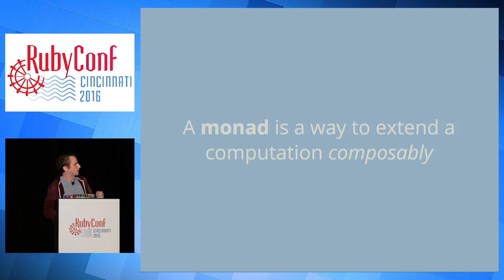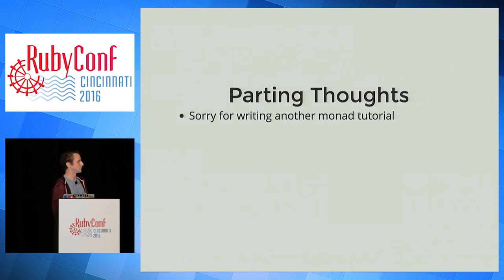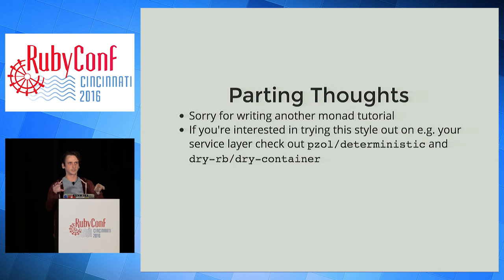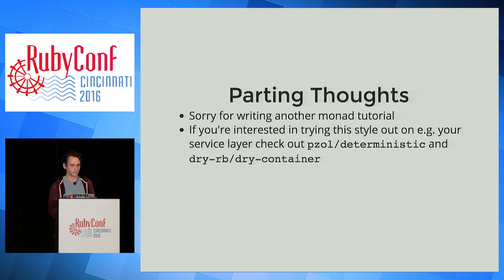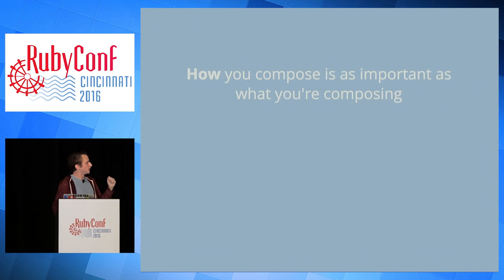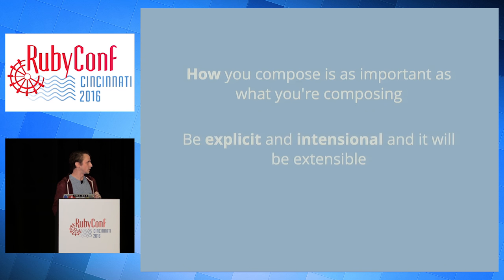Some final parting thoughts. I'm sorry this ended up being a monad tutorial — I feel like those are overdone, but I hope it was helpful. If you want to try this style of Ruby stuff out on your own, I wrote these examples to be explicit and understandable. But don't reinvent the wheel — there are gems out there that will help. If you want to do a service layer, that's a great place to start because service layers are all about verbs, and functional programming is good at that. You probably want some sort of IOC container — those exist. Also, dry-rb in general is largely written in a style very similar to this, so it's instructive to read through those gems. I'll be posting a blog post and references for these slides later. Keep in mind how you compose is at least as important as the individual objects you're composing. As you assemble your programs, be explicit about how things compose, intentional about what those boundaries and values are, and you'll end up with something pretty nice and extensible. Thank you.